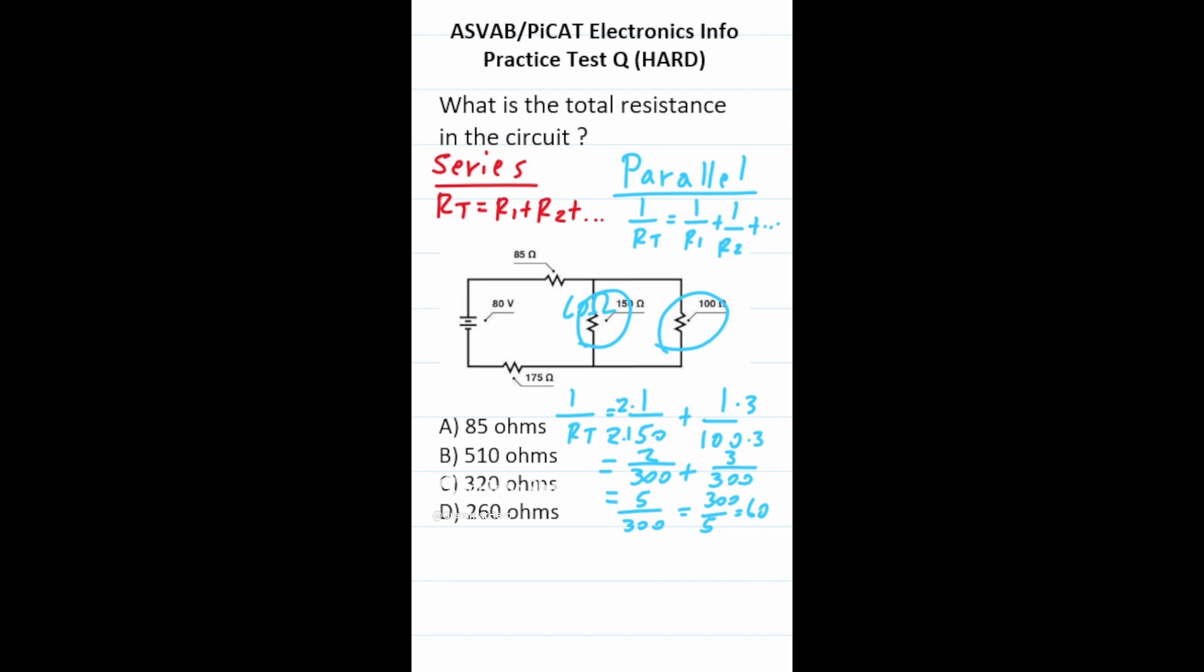Now we're going to calculate the total resistance in the circuit. This circuit and this circuit are in series. We know that the total resistance of these two resistors in parallel are 60 ohms. So we can use this formula now. RT is going to be equal to 85 ohms plus 60 ohms, which we just calculated, plus 175 ohms. That's going to be a total resistance of C, 320 ohms.